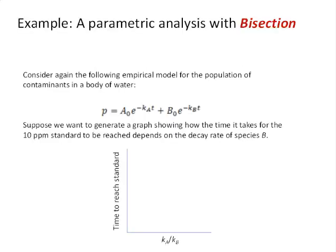If you recall from last week, we looked at an empirical model for the population of contaminants in a body of water, given as this linear combination of two exponential functions. At the close of that video, we wanted to generate a graph showing how the time it takes for the 10 ppm standard to be reached depends on the decay rate of species B.